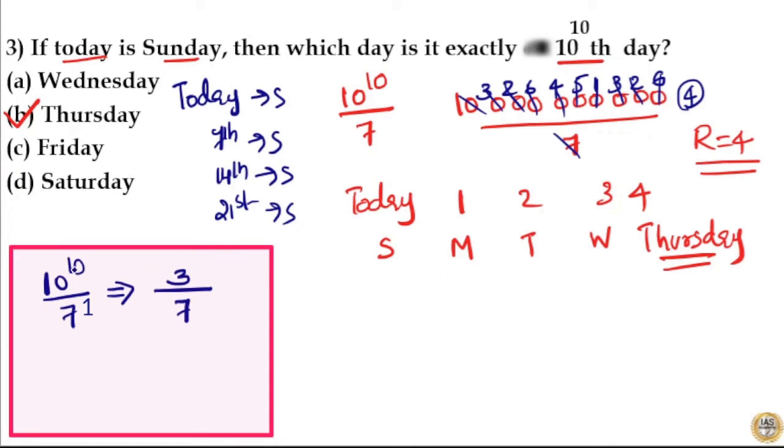Now we are reducing the power of 10. Power of 10 is 10. Here the denominator is 7. Take 1 less from 7, that is 7 minus 1 is 6. So power 10 by 6 will give you remainder 4.